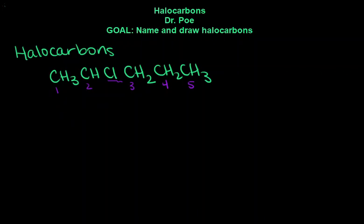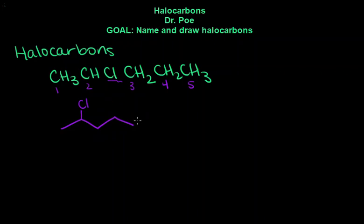So now we draw the skeletal: 1, 2, 3, 4, 5. The first carbon has three H's attached — nothing special. The second one has one H and one CL, so this is where we draw our CL that makes it a halocarbon. The third one is CH2 — nothing special. The fourth is CH2, the fifth is CH3. We've taken the condensed structural formula and made a skeletal structural formula.